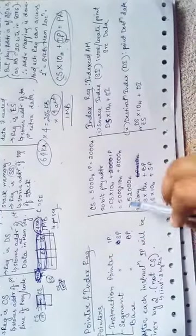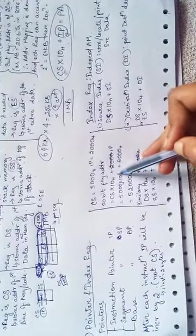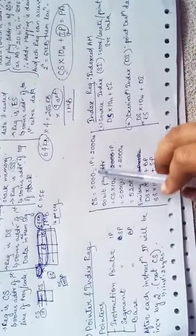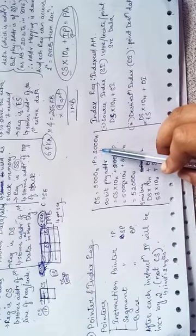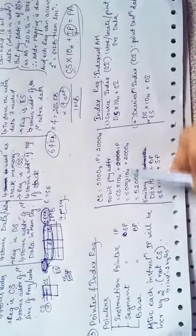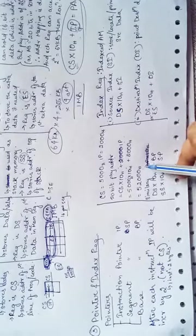It will be CS times 10H plus IP. Suppose CS is holding 5000H and IP is holding 200H, so a 20-bit address can be calculated like this.